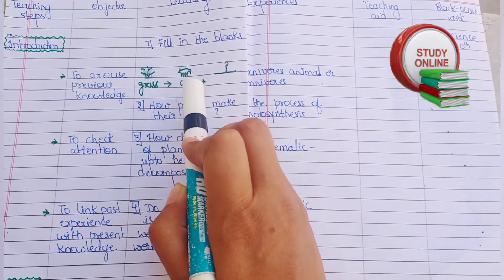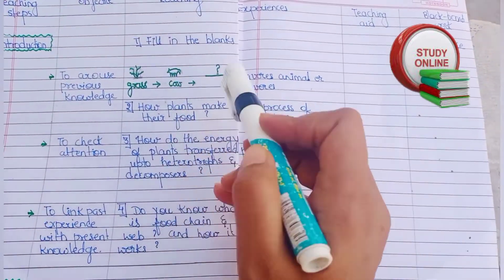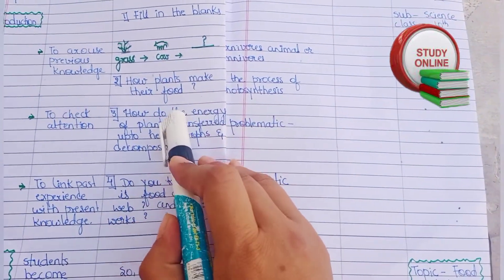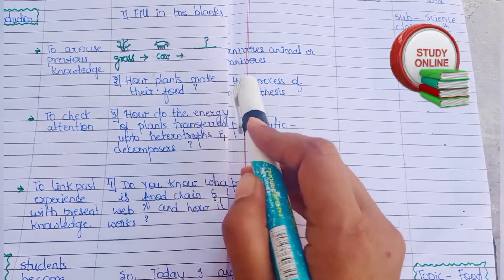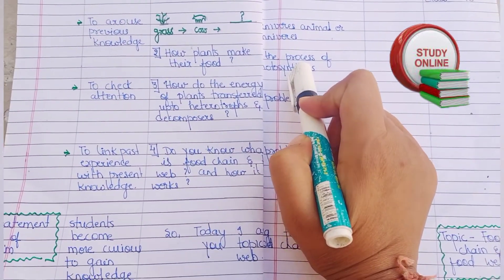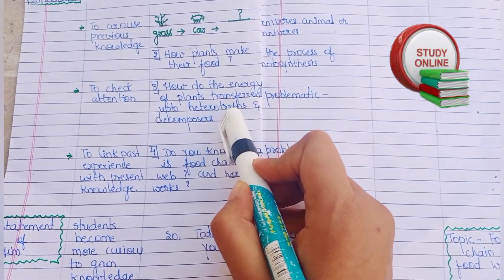Then, how do plants make their food? Students will answer by the process of photosynthesis. Now, how is the energy of plants transferred to heterotrophs and decomposers? This would be a problematic question.